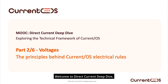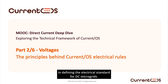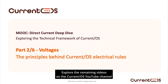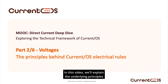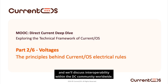Welcome to Direct Current Deep Dive, exploring the technical framework of Current OS — a MOOC designed to dive into the principles behind Current OS technical decisions and their role in defining the electrical standard for DC microgrids. This video is part two of a six-part series. In this video, we'll explain the underlying principles that drive Current OS's technical choices on voltages and voltage bands, and we'll discuss interoperability within the DC community worldwide.